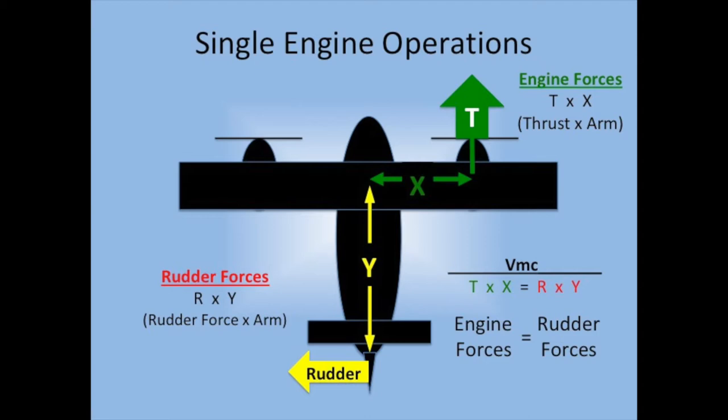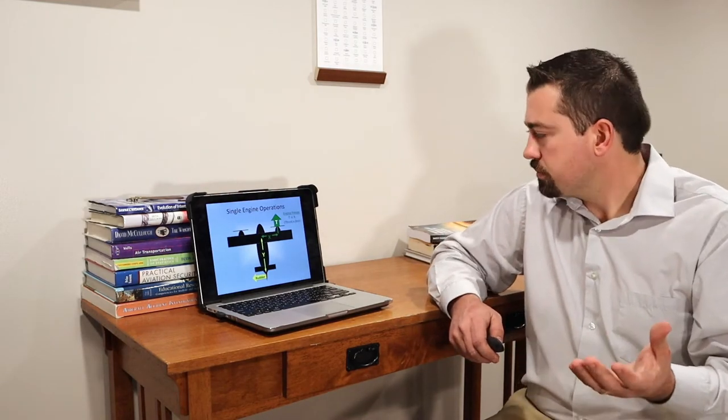If you think about the thrust vector, the thrust that the operative engine is producing, along with the distance from that thrust vector to the center of gravity, that creates a force we can call the engine forces. That thrust and arm will be offset by the same forces on the rudder—whatever force the rudder is producing and the distance from the rudder to the center of gravity. When we talk about rudder forces, we're really talking about the airflow across the rudder and the rudder's deflection turning the aircraft against that asymmetrical thrust.